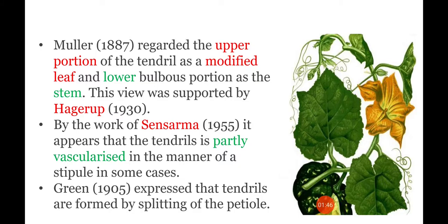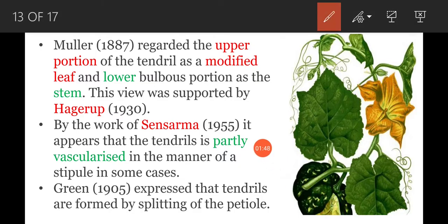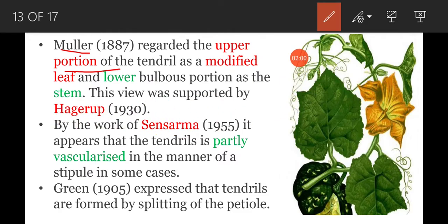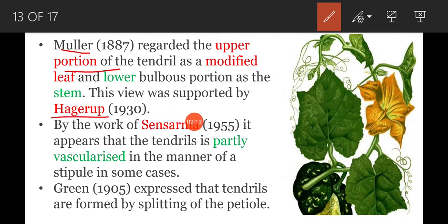Next, Muller recorded that the upper portion of the tendril is a modified leaf and the lower bulbous portion is stem. This branched portion is the modified leaf, and the basal part of the tendril is the modified stem. This view is supported by Hegerup.